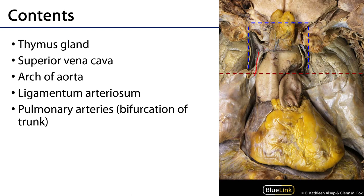We can still see the superior vena cava and the arch of the aorta. Moving toward the superior mediastinum we can also see the pulmonary trunk, which bifurcates into the left and right pulmonary arteries. In association with the right pulmonary artery we can see the ligamentum arteriosum — a remnant of the ductus arteriosus, which in utero conducted blood from the origin of the right pulmonary artery to the arch of the aorta to bypass pulmonary circulation. Here it is just a fibrous ligament.